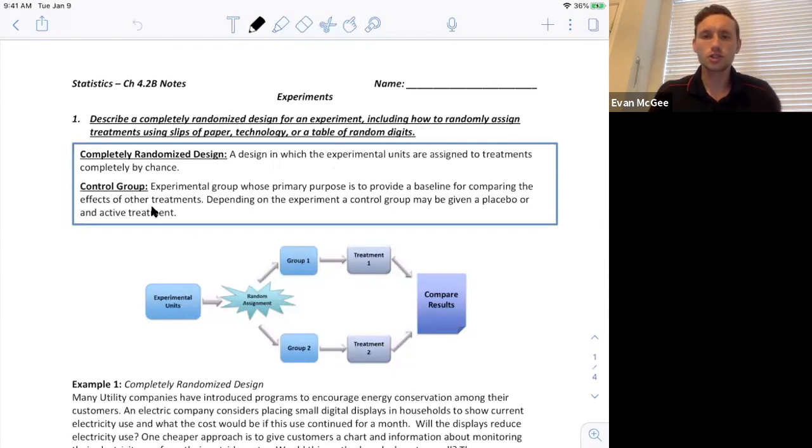A control group is just a new term and it's an experimental group whose primary purpose is to provide a baseline for comparing the effects of other treatments. So basically the control group in some instances they won't receive any treatment at all or they'll be given a placebo and more on a placebo later in this video.